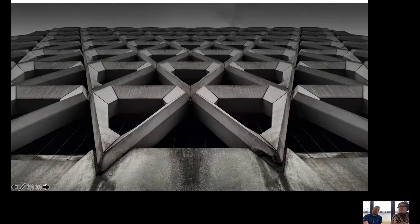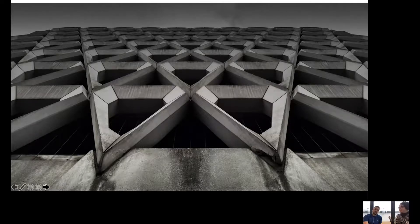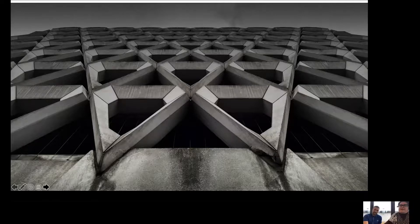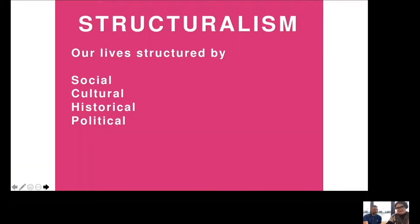So Saussure and all the semiotics were saying that this is a structure that make us want things, that make us desire, that make us dream, that make us know better, that make us graduate and make money. All of this is human, right? It's based on knowledge. So this is a structure of language that determines social, cultural, historical and political situations.